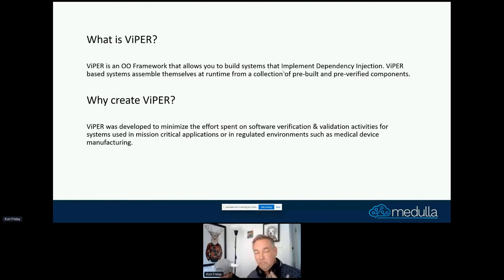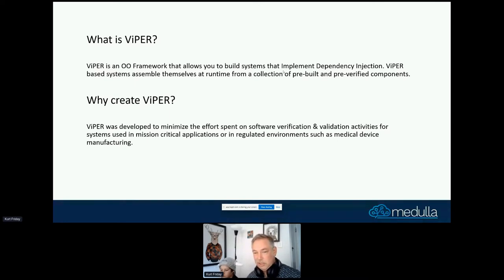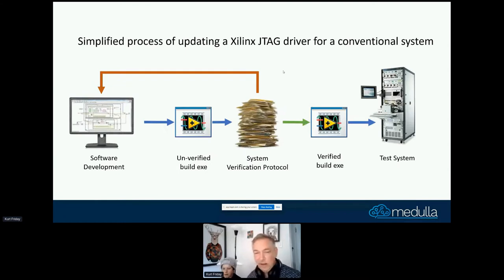The reason why we built Viper — it was originally called Viking when I came into Cochlear — was that by taking the dependencies outside of the system and allowing them to be injected, you can pre-validate and pre-verify these components. That's a big deal in medical device manufacturing, where change management is quite an involved and expensive process. This had real value for systems within regulated industries.